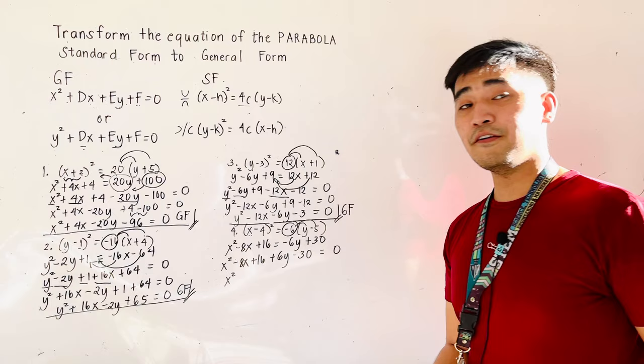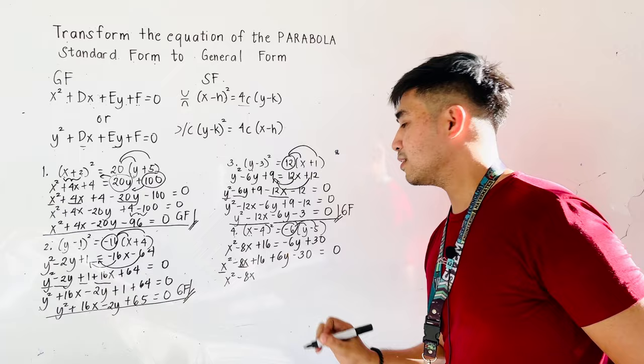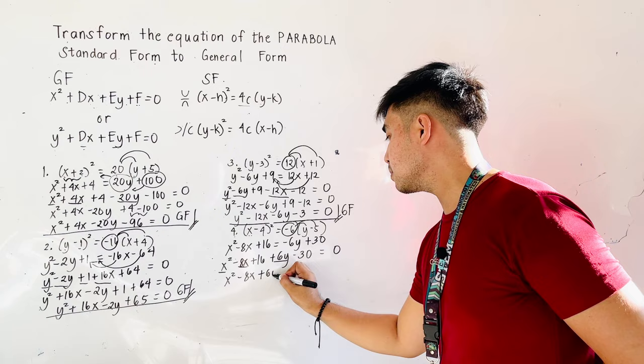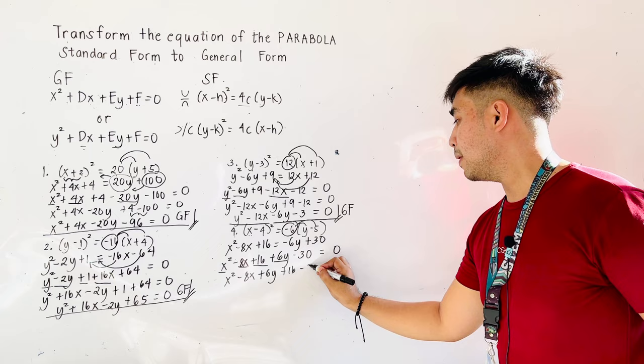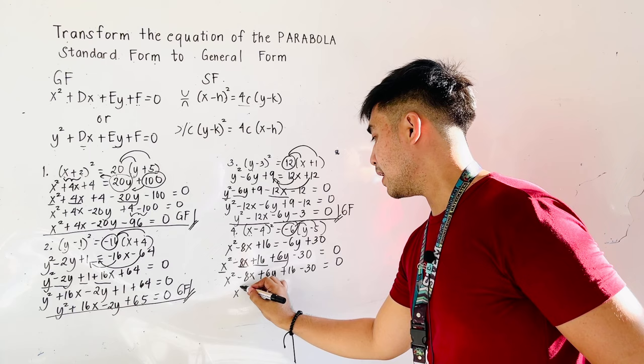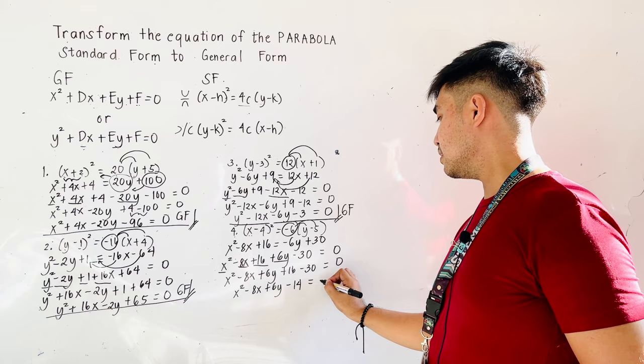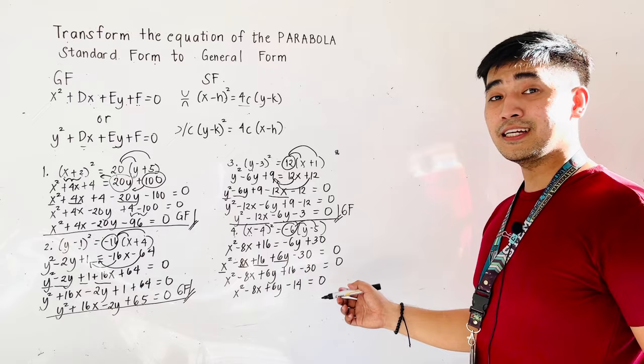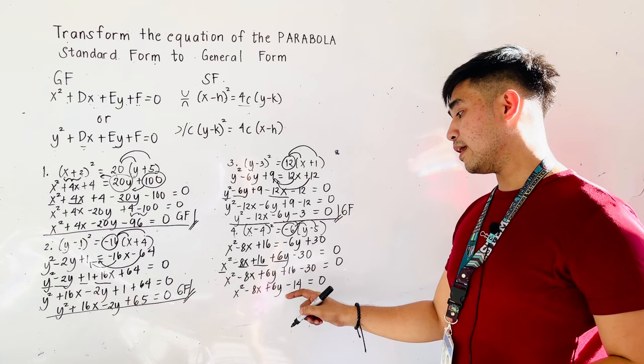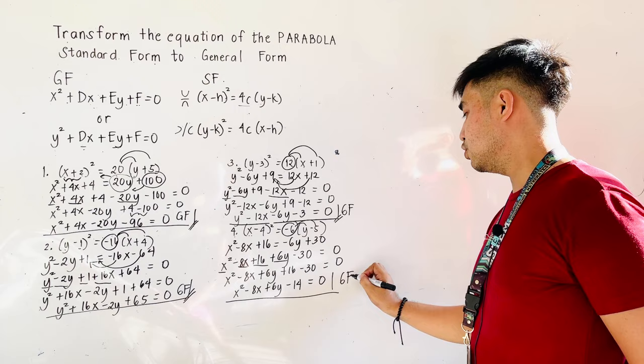Since we have x squared, the variable x comes next, and that is minus 8x. And what comes after the variable x? The variable y, so that becomes plus 6y. And then all the constants: plus 16 minus 30 is equal to 0. Simplifying it further, we'll now be having x squared minus 8x plus 6y, and positive 16 minus 30 is negative 14, is equal to 0. Therefore, the general form of x minus 4 quantity squared is equal to negative 6 times the quantity y minus 5 is x squared minus 8x plus 6y minus 14 is equal to 0.